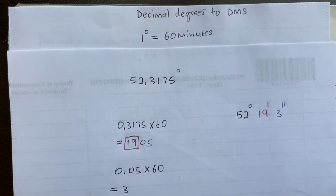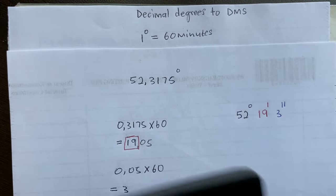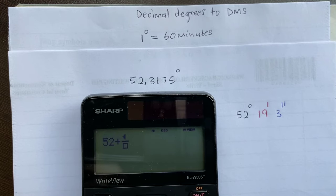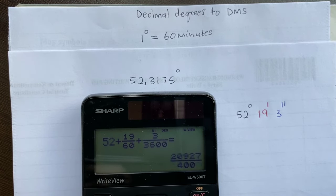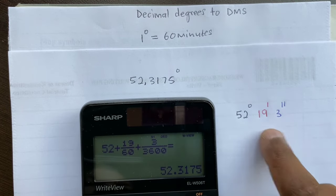From here you can double-check your answer by punching it back into the calculator to verify whether it's correct. We say 52 plus 19 divided by 60, plus 3 divided by 3600, and we get back 52.3175 — meaning our answer is correct.